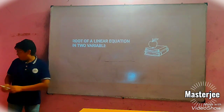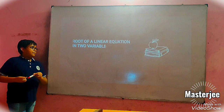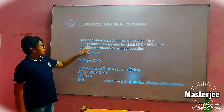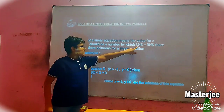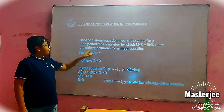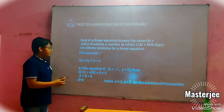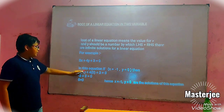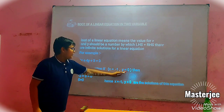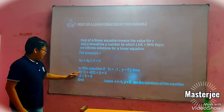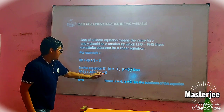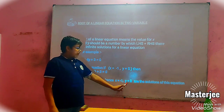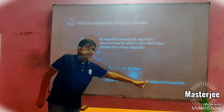Root of a linear equation in 2 variables. The root of a linear equation means the value should be a number by which LHS equals RHS. There are infinite solutions for a linear equation in 2 variables. For example, 3X plus 4Y plus 3 is a linear equation in 2 variables. In this equation, if X equals minus 1 and Y equals 0, then 3 into minus 1 plus 4 into 0 plus 3 equals 0, that means minus 3 plus 3 equals 0. Hence X equal to minus 1 and Y equal to 0 are the solutions for this equation.